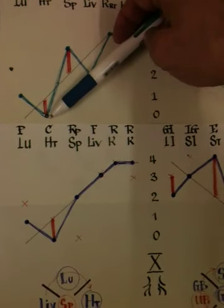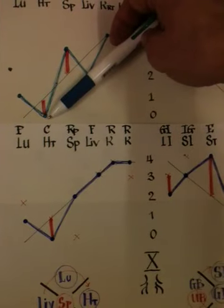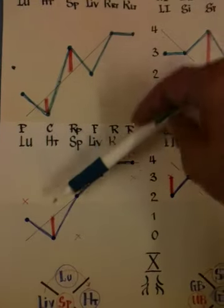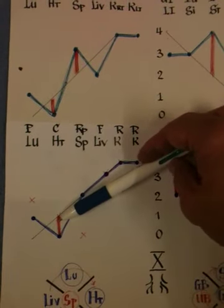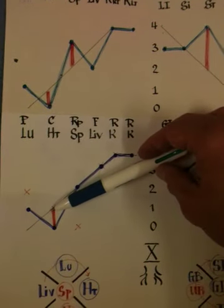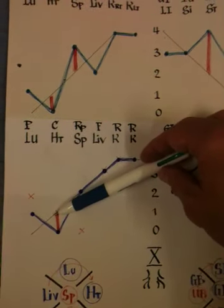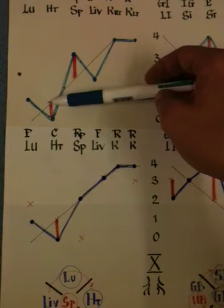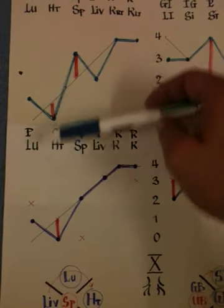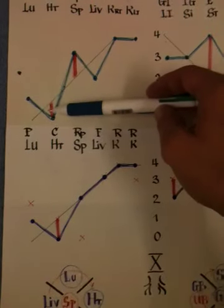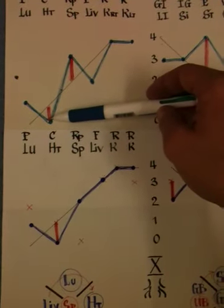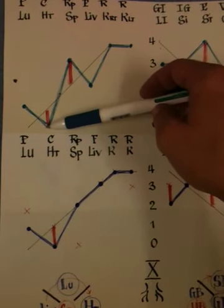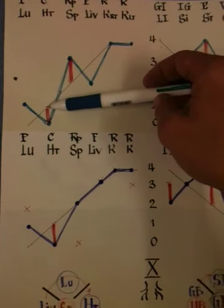So according to Nan Jing, we need to do acupuncture on the back shu points and add moxibustion on the mu point of the heart. We do dispersion by puncturing the back shu point and doing moxibustion over the heart mu point, moving this back towards the balanced line where it should be.